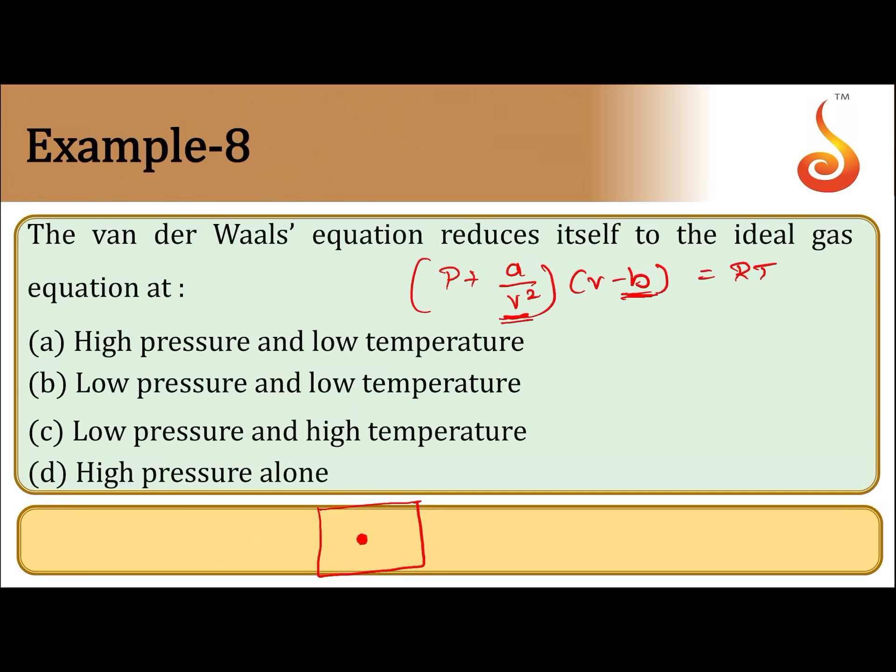When do we apply these two corrections? At high pressure, moderate pressure, or low temperature. But when temperature is very high and pressure is very low, the volume occupied by the gas molecule will be very high.